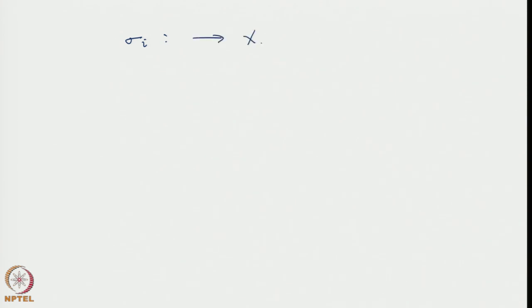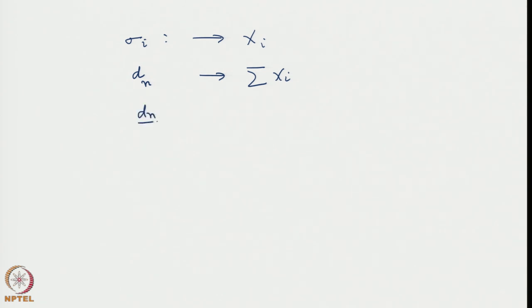We now connect this to the Central Limit Theorem (CLT). In the CLT connection, every one of the sigma_i values maps to a sample value x_i, the realization of a particular random variable x. So sigma_i is a realization of a particular random variable sigma. And d_n, which is the sum of sigma_i's, corresponds to the sum of x_i's. So d_n divided by n corresponds to the sum of x_i divided by n, which we had denoted as y, the so-called sample mean.